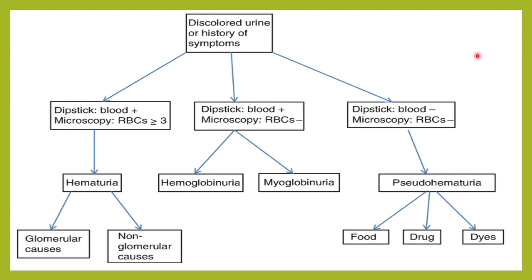Whereas if you have consumed certain beets or certain drugs like rifampicin, only the color of the urine will be red but the dipstick for blood will be negative, and definitely when you see it under the microscope there will be no RBCs. So that is pseudohematuria.